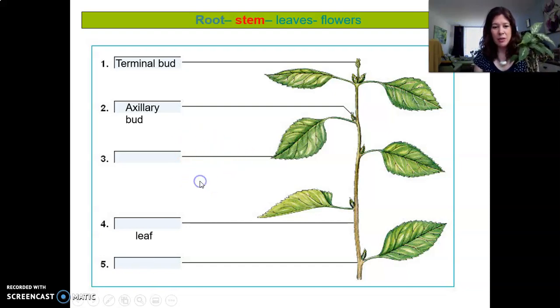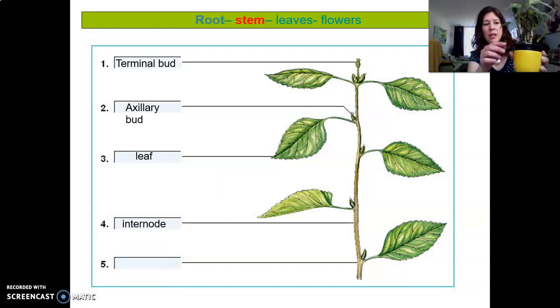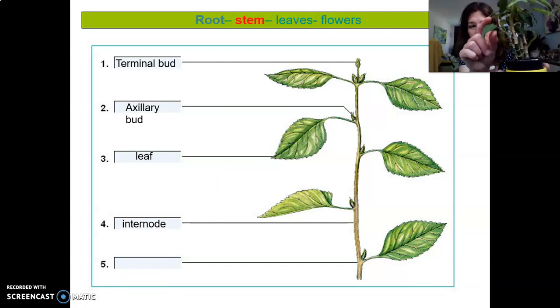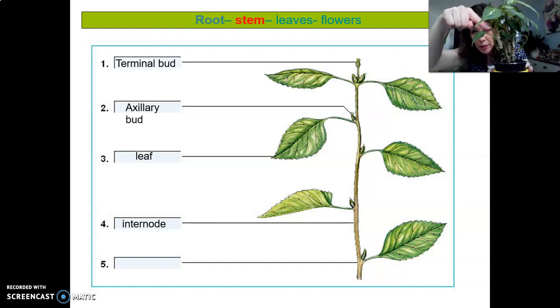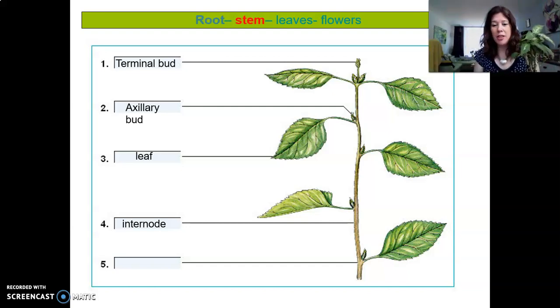So then we have of course the leaf. Then we have the internode. Now the internode is the space between two leaves. So here we have one leaf, here we have the second leaf. And in between here, that piece between the two leaves is called an internode.